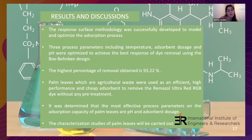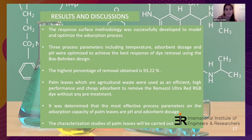The response surface methodology was successfully applied. Two process parameters — temperature, adsorbent dosage, and pH — were optimized for the best response of dye removal using Box-Behnken design. The highest percentage of removal obtained is 93.92%. Palm leaves are efficient, high-performance, and cheap adsorbents that require no special pretreatment. The most effective process parameters are pH and adsorbent dosage. Future work will include characterization of palm leaves.